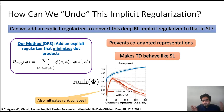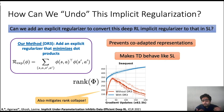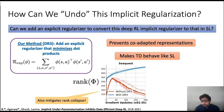In earlier work, TD learning was shown to lead to very low-rank representations — representations whose ranks have collapsed. When you add the DR3 regularizer during training, TD learning actually gives rise to high-rank representations, much like what we get from supervised learning. So DR3 makes TD learning behave more like supervised learning in terms of representation quality.